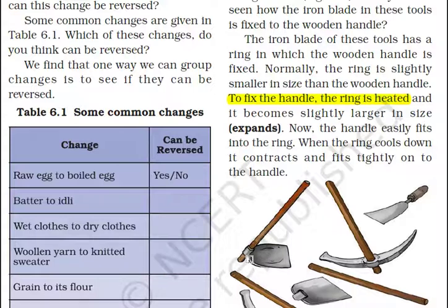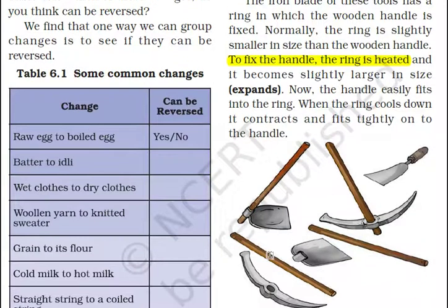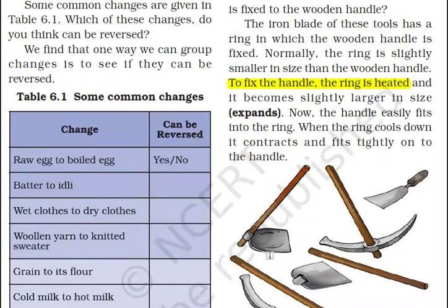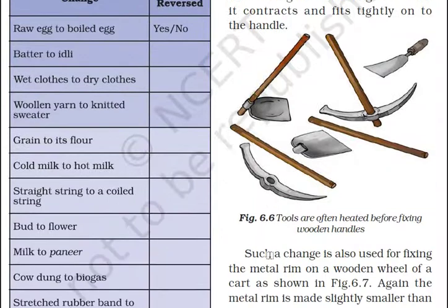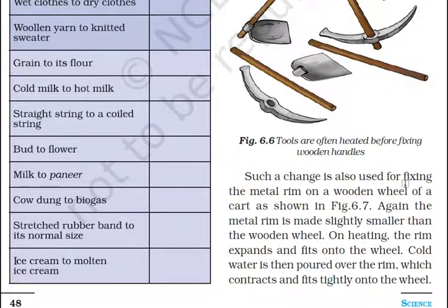So two things are done here: first, by heating the ring it expands and loosens, then the handle is inserted. After cooling, it contracts and the handle fits tightly. The same technique is also used for fixing the metal rim on a wooden wheel of a cart, as shown in figure 6.7.